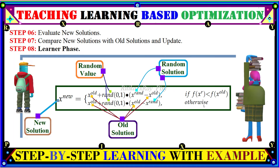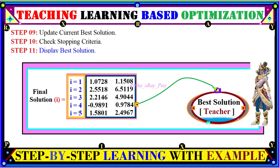In the learner phase (step eight), using a mathematical equation we update the new solutions again, since learners can interact with each other and even move randomly. We check the fitness values computed for individuals, compare them, and generate new solutions in the learner phase. After that, we update the current population, check the stopping criteria, and display the best solution among all.